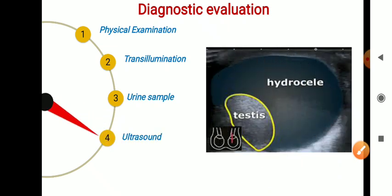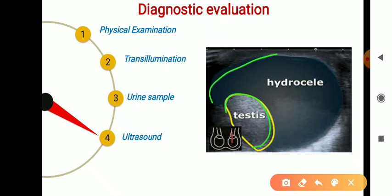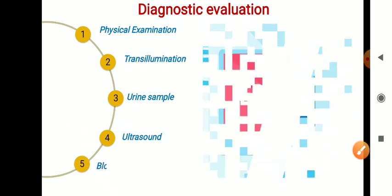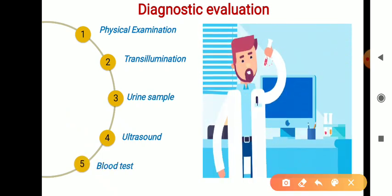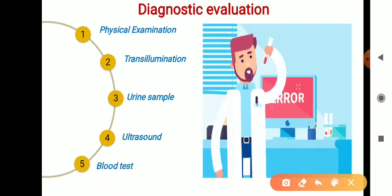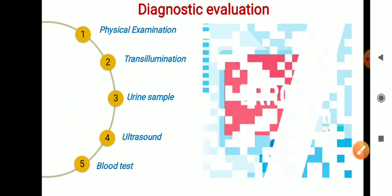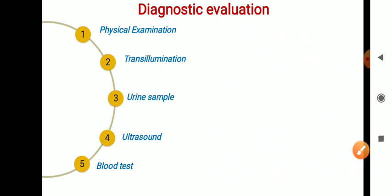Fourth is ultrasound — in the picture you can see the testis and the fluid filled in the scrotum indicating hydrocele. Fifth is a blood test, which is also sent to detect infection.